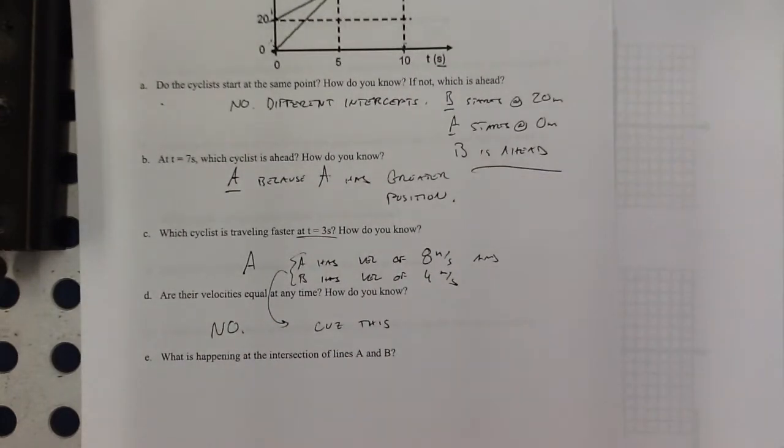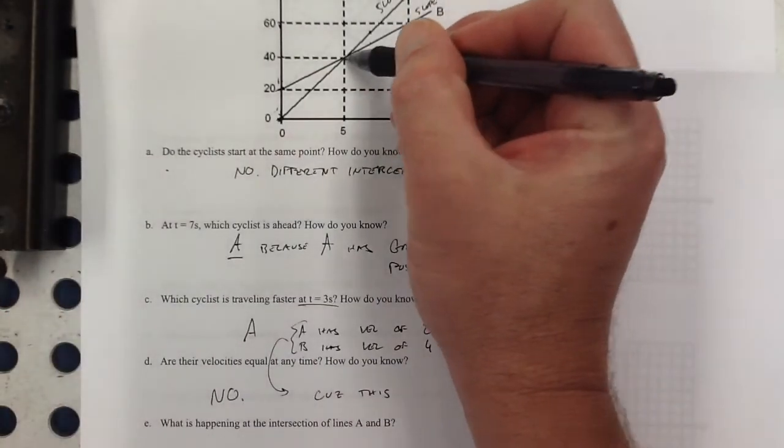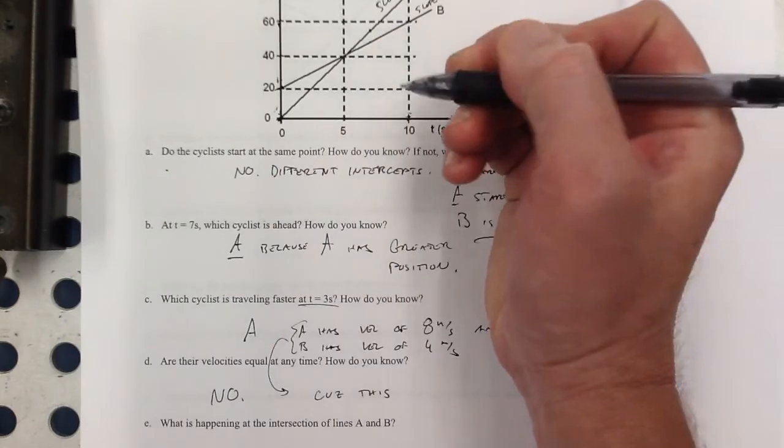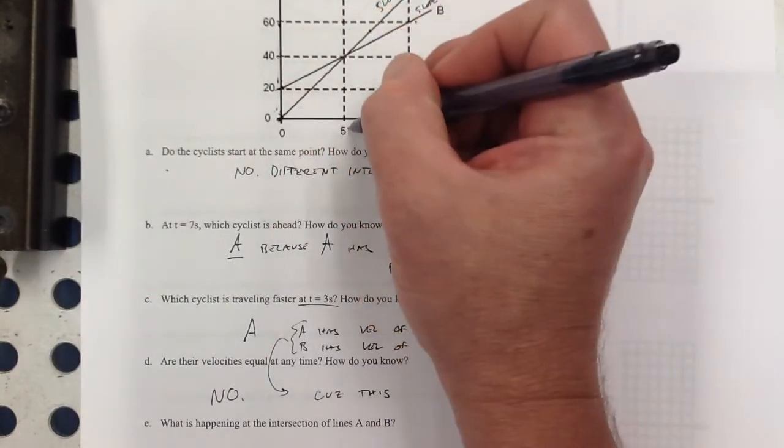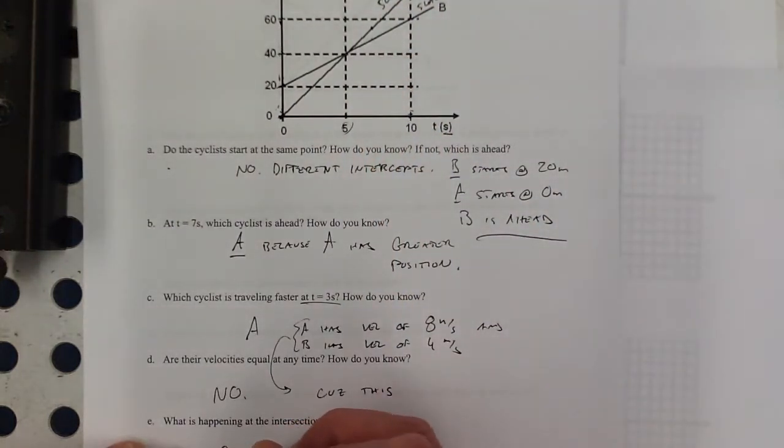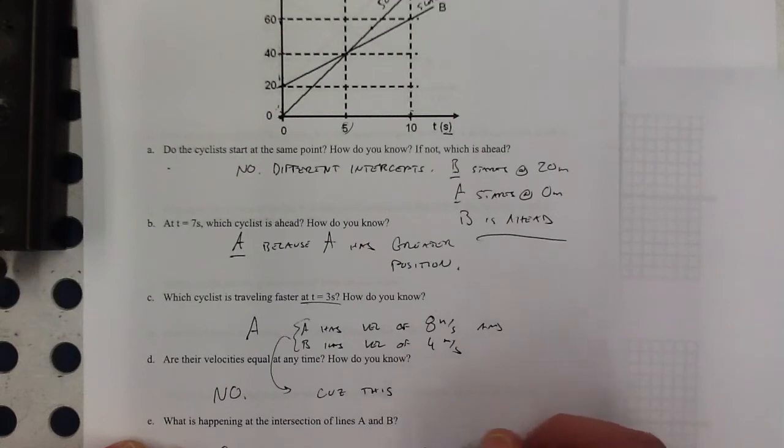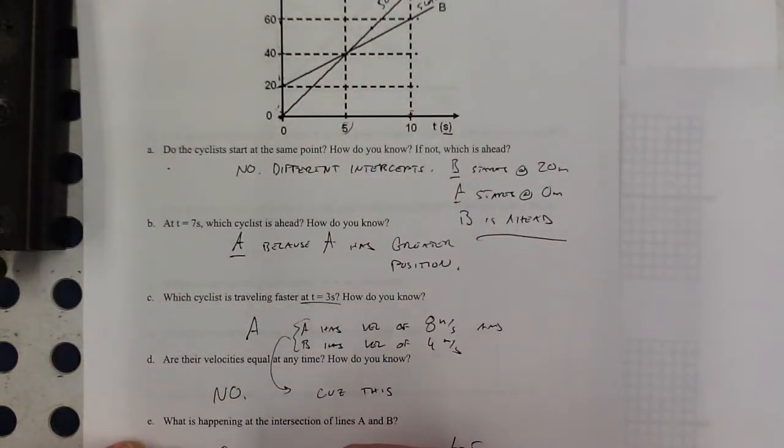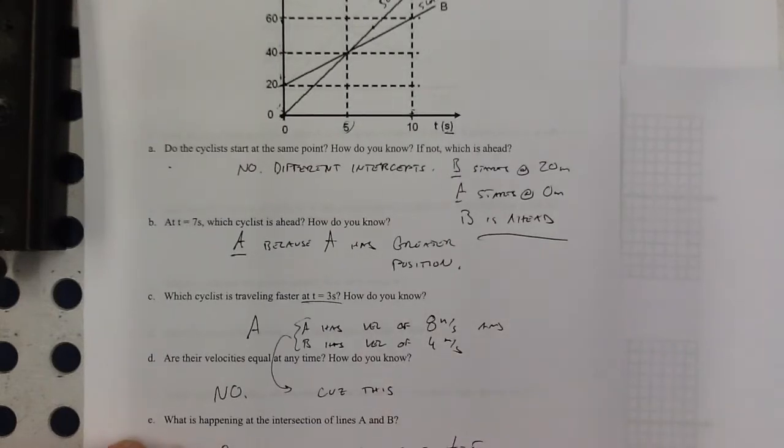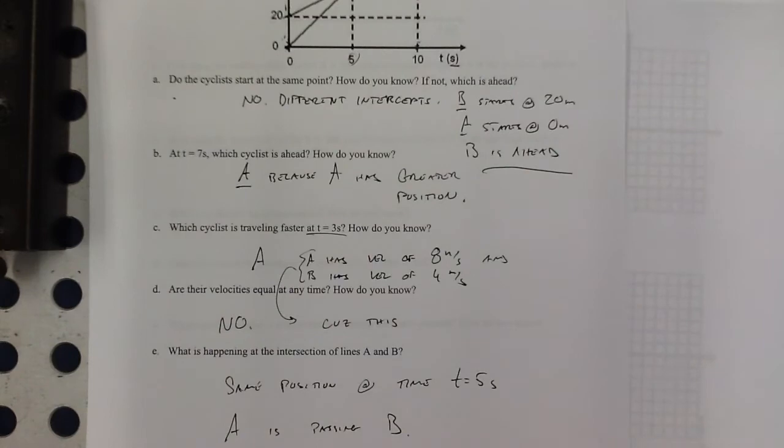What is happening at the intersection of lines A and B? Well, something's the same there. When lines intersect, they're at the same point. So what's happening here? They're at the same place at the same time. Same position at time 5. And you could say, if you're trying to actually describe what's happening here, you could say A is passing B.